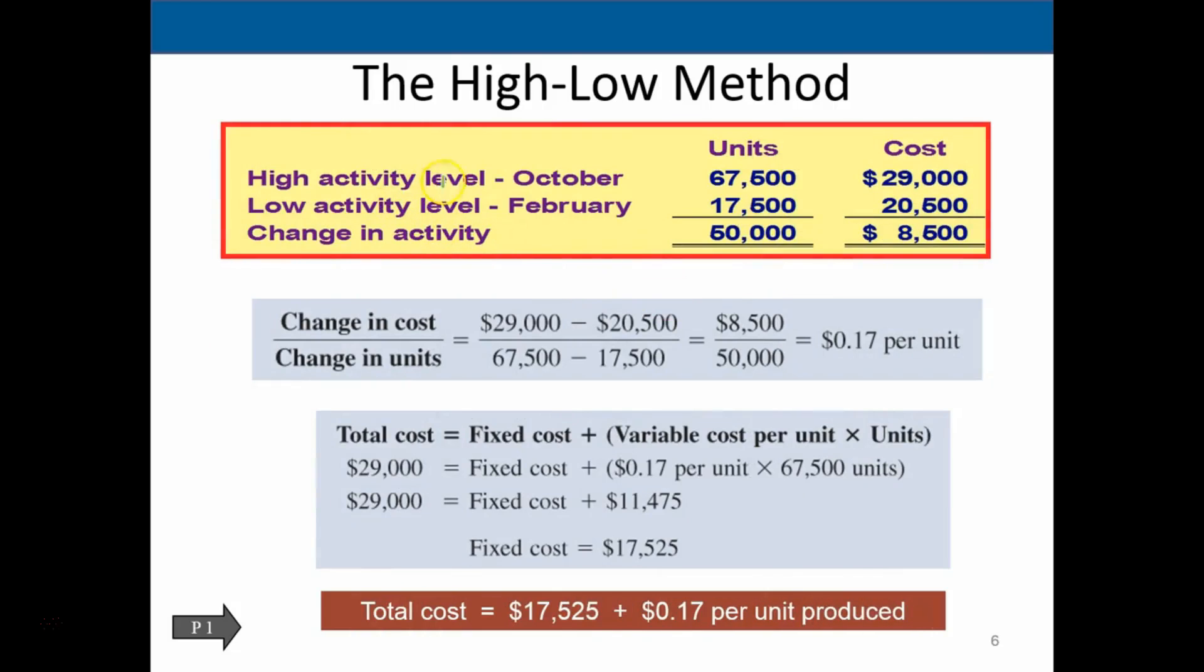So what we're going to do is pick the highest and lowest production volumes and take those two points. And in this case, the high activity level was in units 67.5, which had a related cost of 29. The low activity level was 17.5, which had a cost of 20,008, the difference being the 50 and the 8.5.